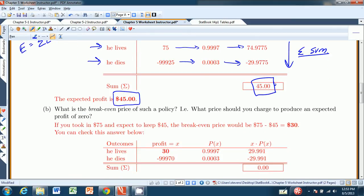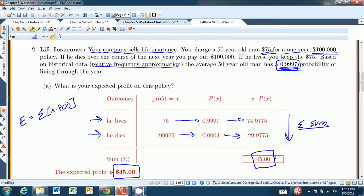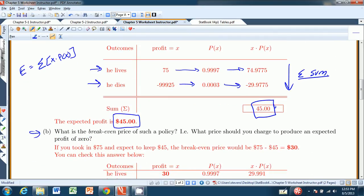What is the breakeven price for such a policy? In other words, what price should you charge to produce an expected profit of zero? If you look at it this way, you charged $75, and you expect to keep $45. So you took in $75, you expect to keep $45. So the breakeven price is just that difference, $75 minus $45, which is $30. So you can expect, if you charge $30, that there will be no profit, no loss, in the expected value sense.